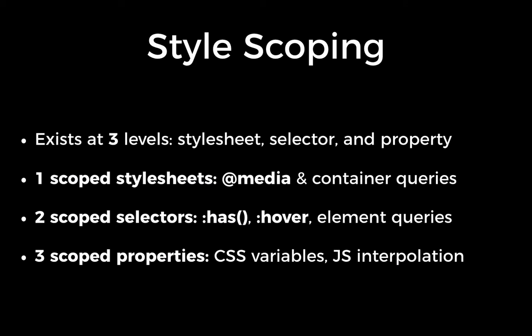An example of level two style scoping — scoped selectors — would be the :has pseudoclass in CSS, hover, or element queries, where you're adding something onto a selector that determines its validity. A JavaScript selector resolver would be a level two scoped style. The third type is similar to Internet Explorer's old expression statement: scoped properties or CSS variables — interpolating JavaScript inside the value supplied to a property in CSS.